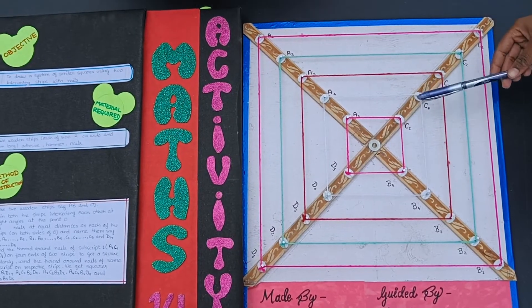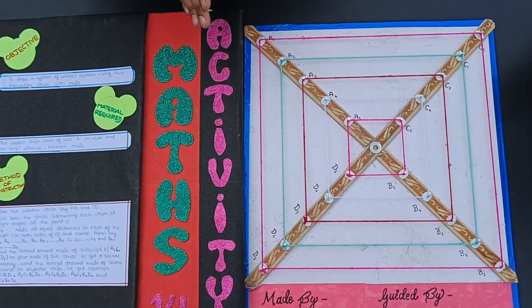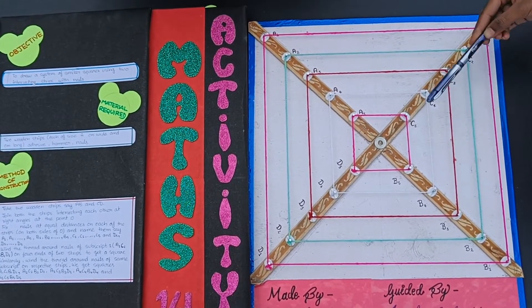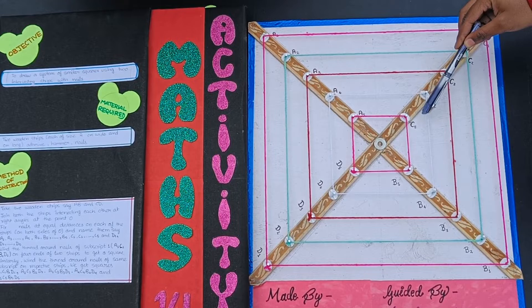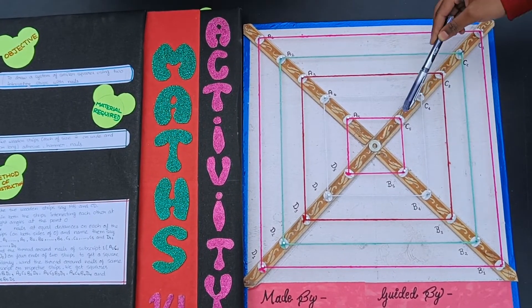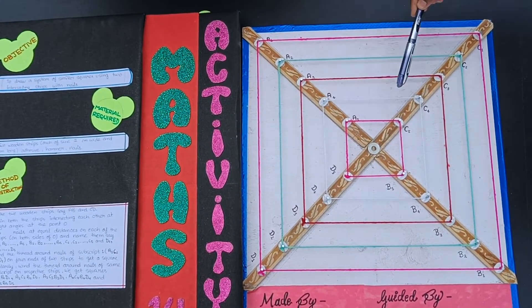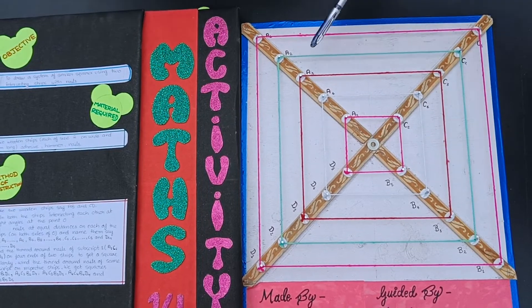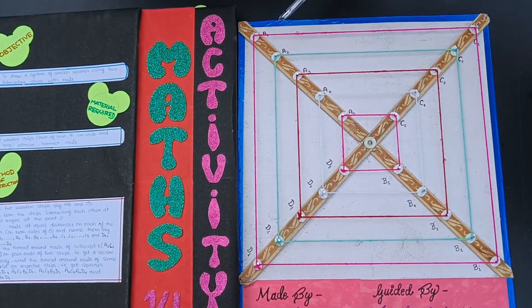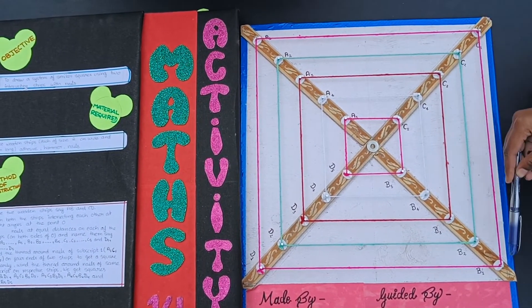Here, the corresponding angles of all five squares are equal to each other, and their corresponding sides are in same ratio. So, we can say that these all five squares are similar to each other.